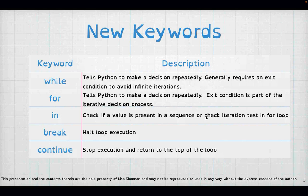We have some new keywords tonight. The keyword 'while' is a loop — an indicator to Python that you're going to do something repeatedly. We also have 'for', another way to tell Python you're going to do something repeatedly, and there are specific situations where you'd use each. The keyword 'in' asks whether something is present in a sequence. 'Break' stops the loop entirely, and 'continue' stops execution at that point and returns back up to the top of the loop.